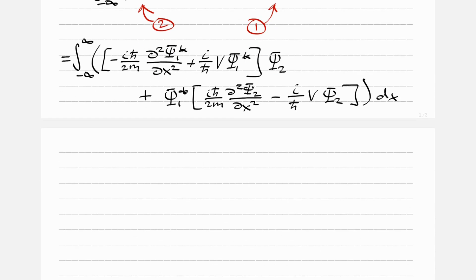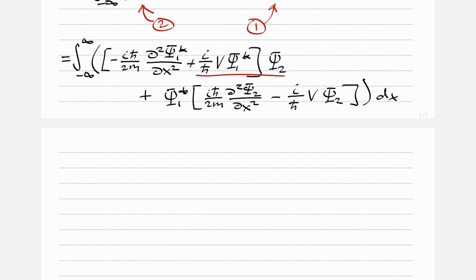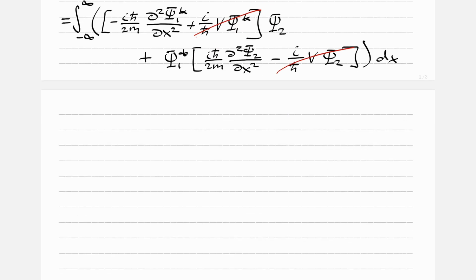Plugging those in, we get the integral from minus infinity to infinity of: the bracket minus i h-bar over 2m times d squared psi 1 star/dx squared plus i over h-bar times V(x) times psi 1 star, times psi 2, plus psi 1 star times the bracket i h-bar over 2m times d squared psi 2/dx squared minus i over h-bar times V(x) times psi 2, dx. The V terms — positive i/h-bar times V times psi 1 star psi 2 and negative i/h-bar times V times psi 1 star psi 2 — are the same and cancel.